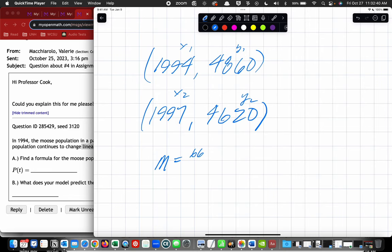So I have 4620 minus 4860, divided by 1997 minus 1994, which gives us 3 in the denominator, and negative 160, I want to say. Let's see. 46, 47, 260, maybe. 240.